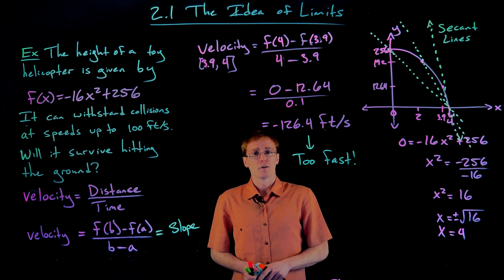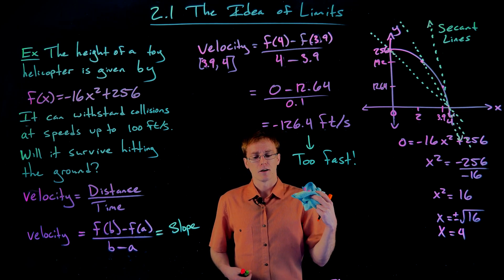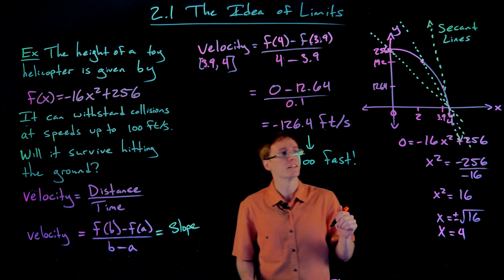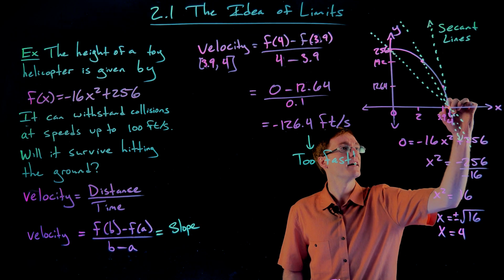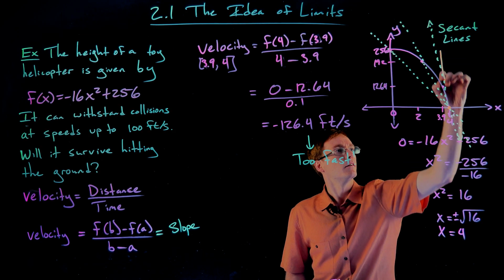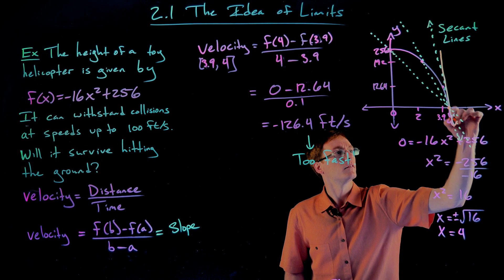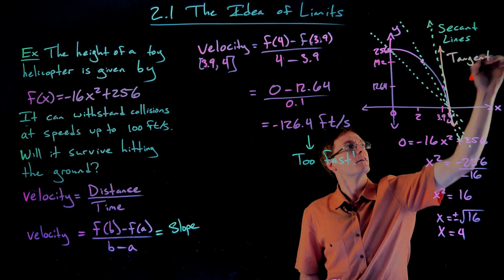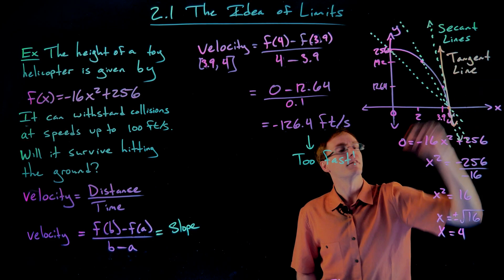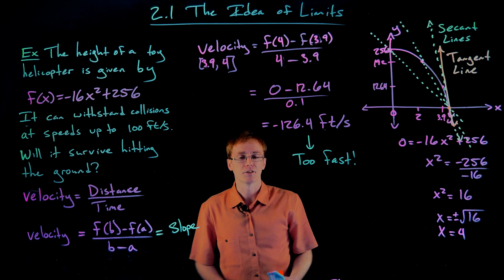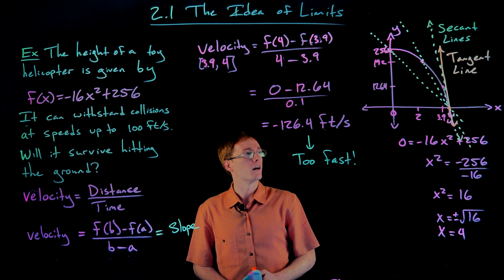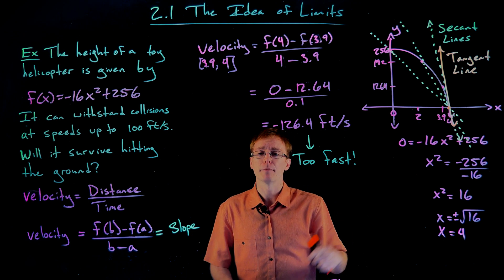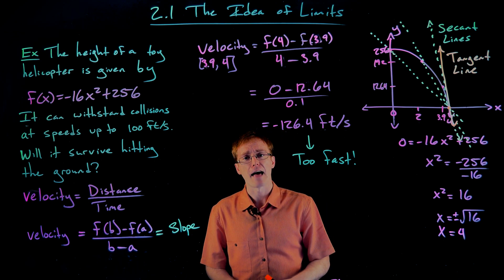At the beginning of the video, I mentioned we'd talk about how limits show up in finding the slope of a tangent line. We haven't defined what a tangent line is yet — I'll do that now. This is still a relatively informal definition, but a tangent line is essentially a unique line that touches our curve at a single point and goes in the same direction as the curve at that point.